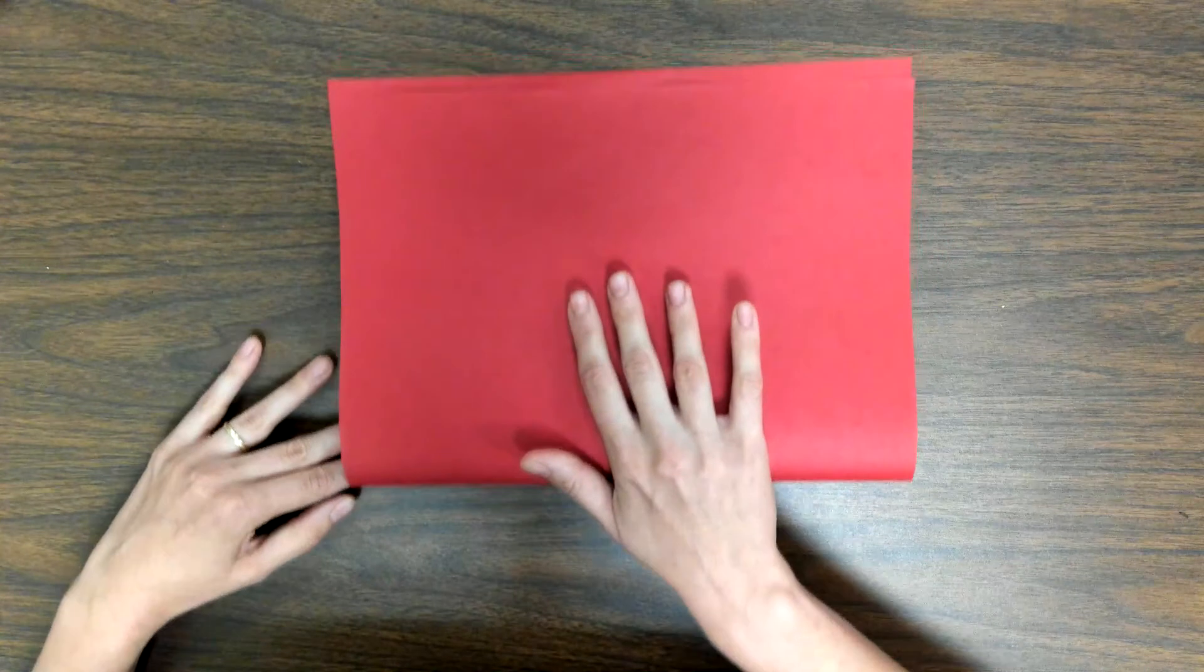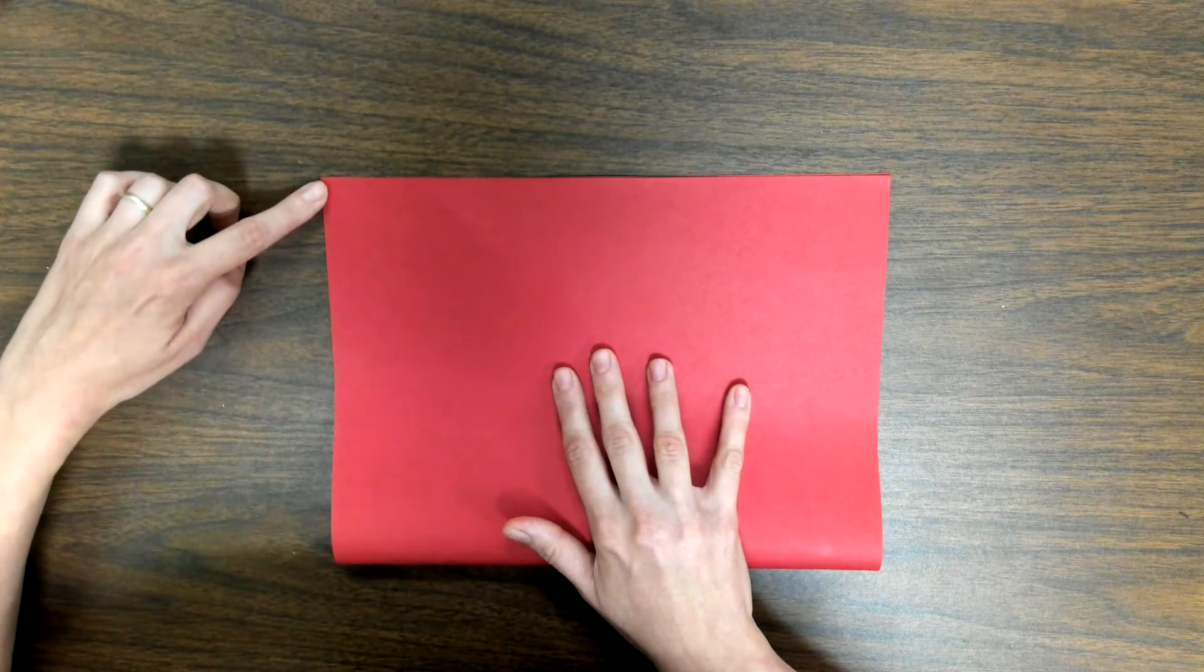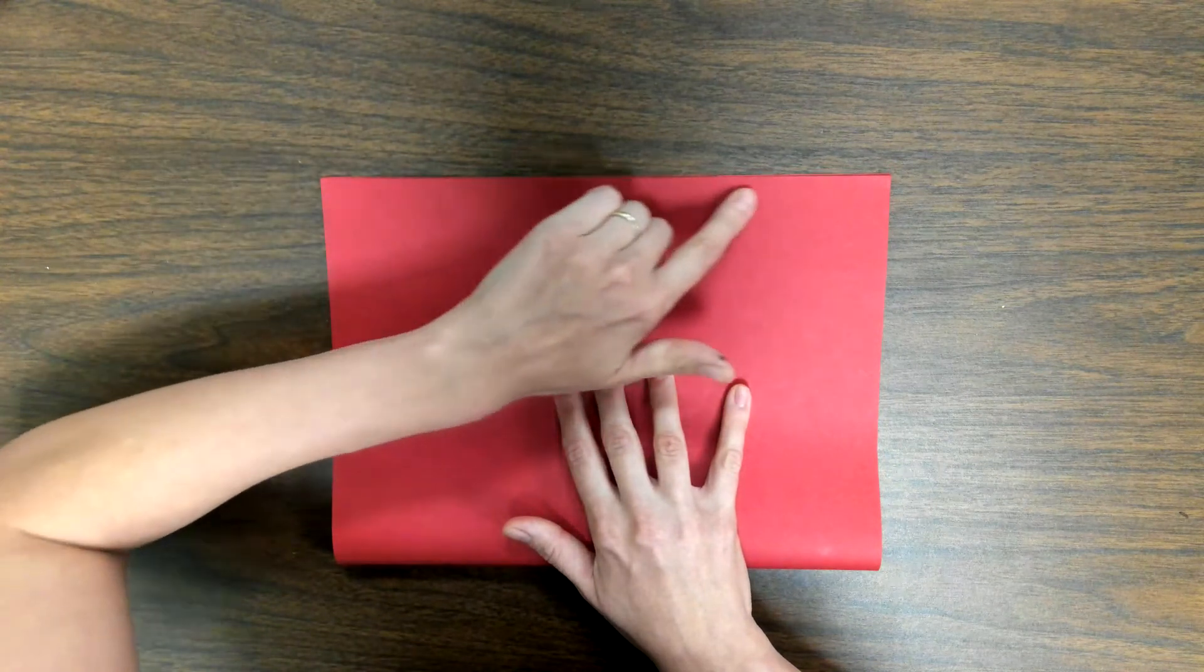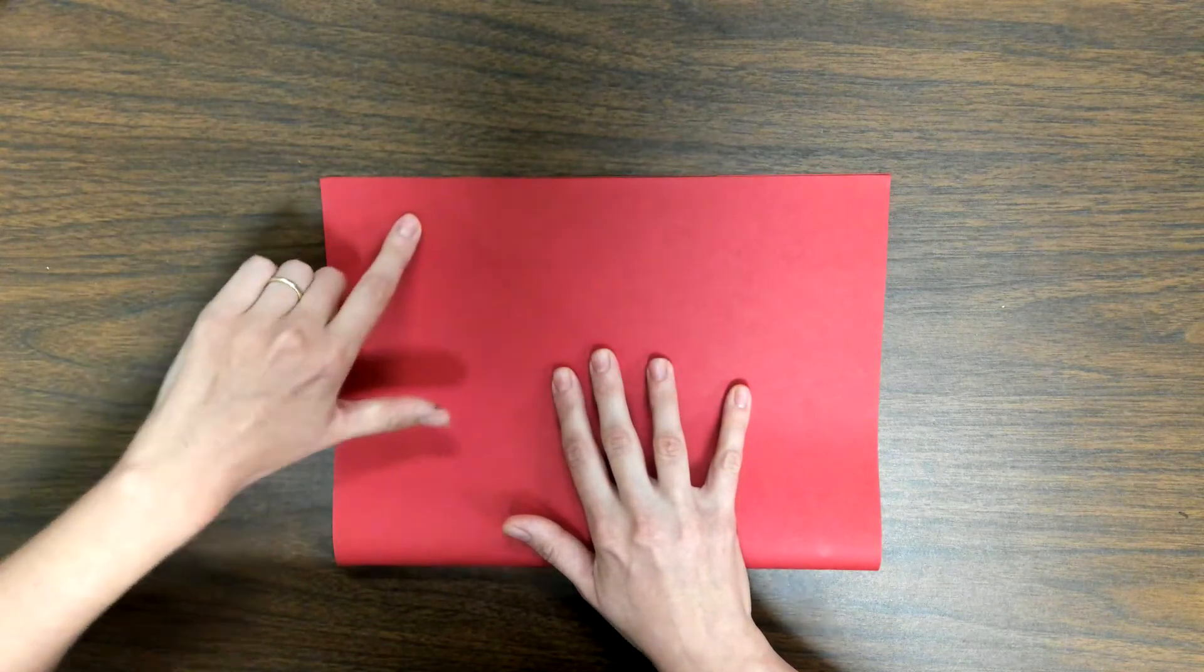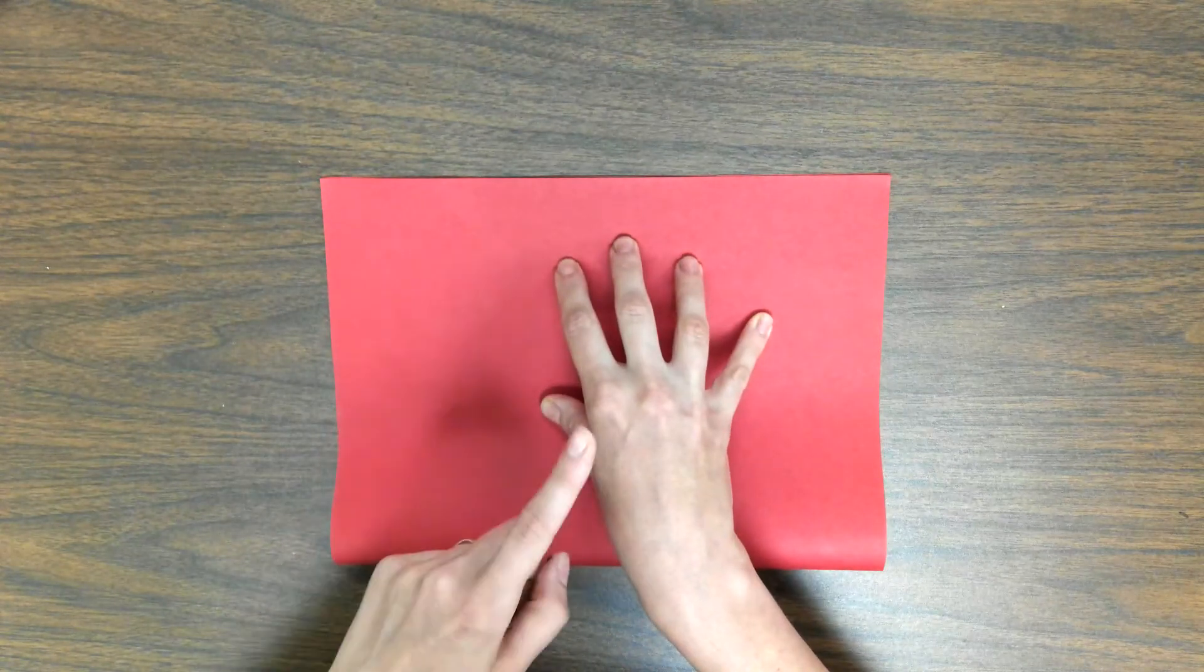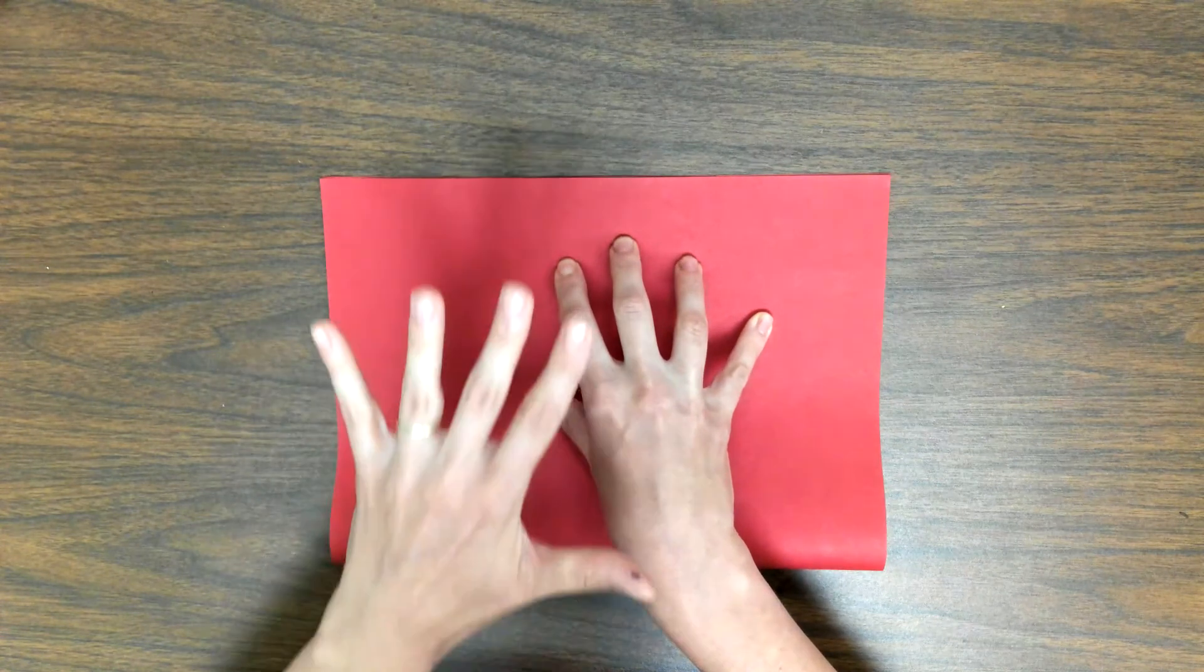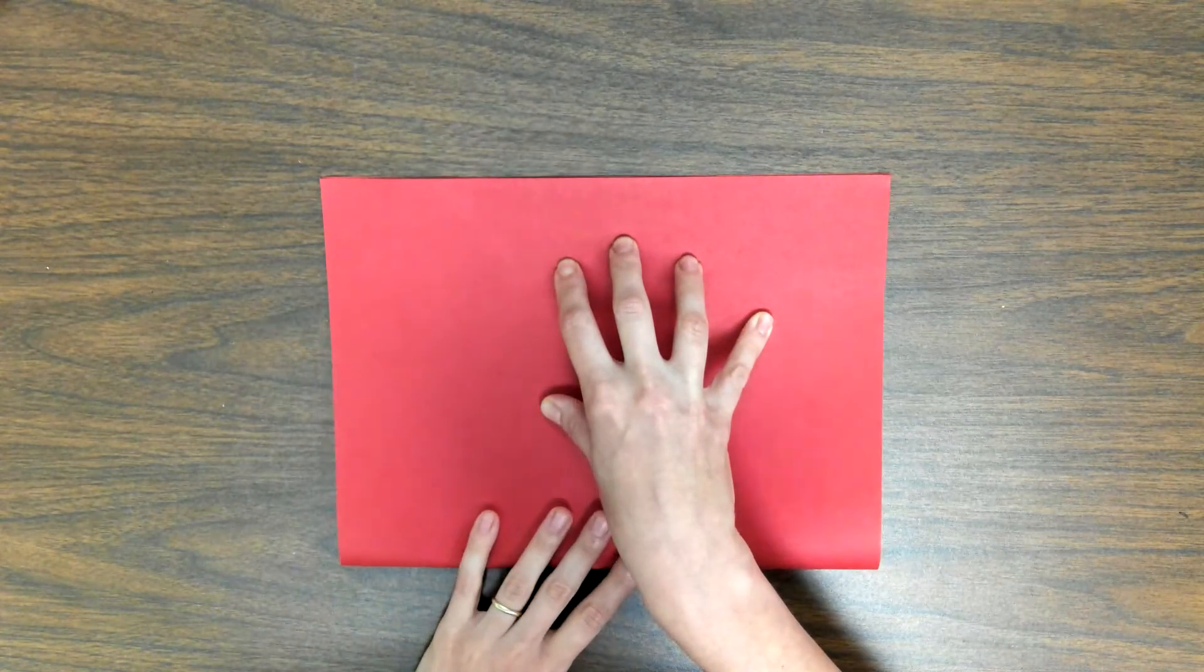And what you're going to do is keep your paper on your table, and take the bottom end, the bottom side, and line it up very carefully with the top side, making sure that it's lined up exactly as you see it.